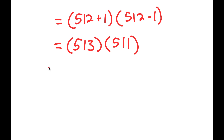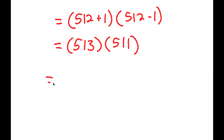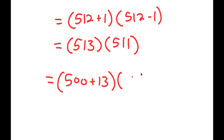Now there is a simpler way. Instead of multiplying these two using the normal method, there is a faster and more efficient way to do that. I'm going to rewrite 513 as 500 plus 13 and 511 as 500 plus 11.